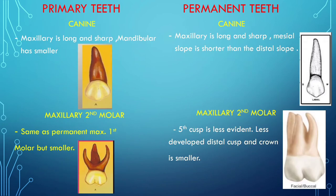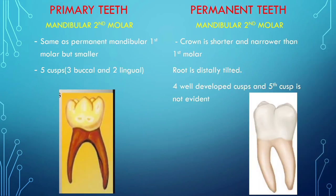Canines are longer, sharper, and the mandibular canine is smaller in primary teeth. The mesial slope is shorter than the distal slope in primary mandibular canine. The maxillary second molar in primary is similar to the permanent maxillary first molar but smaller. In permanent dentition, the fifth cusp is less evident, the distal cusp is less developed, and the crown is smaller. The mandibular second molar in primary is similar to the permanent mandibular first molar but smaller, and the crown is shorter and narrower than the first molar in permanent.